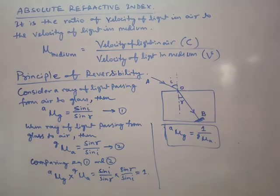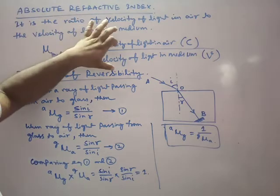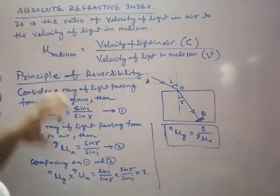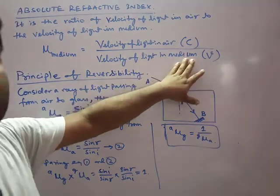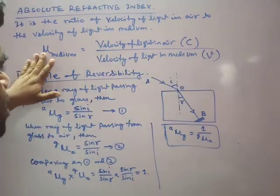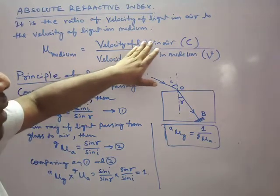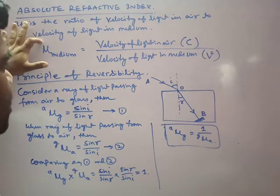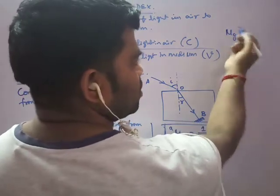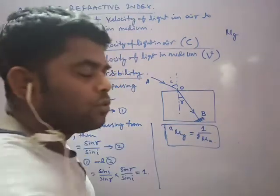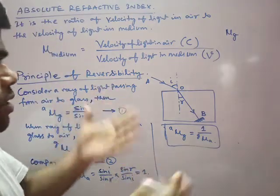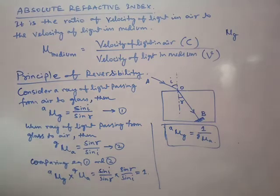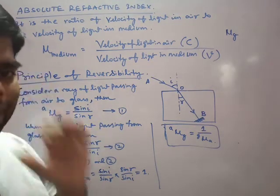Absolute refractive index has another formula. The second formula is: velocity of light in air divided by velocity of light in the medium (which may be glass, water, etc.). If refractive index is given without specifying medium, it is taken as refractive index of glass with respect to air. If it is with respect to some other medium, we mention it explicitly.